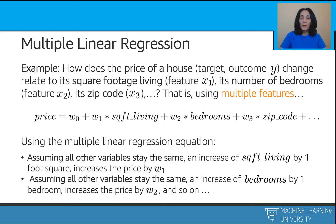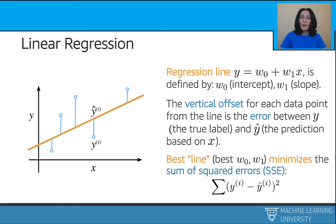Using multiple linear regression and assuming all other variables stay the same, an increase of one square foot living increases the price by w1 dollars, and an increase of one bedroom increases the price by w2 dollars, and so on. The key question is: what values do these weights take? We truly need them to compute the desired sales price. And here's the key idea behind regression: these weights will be learned from the data — the regression equation will be learned from the data.